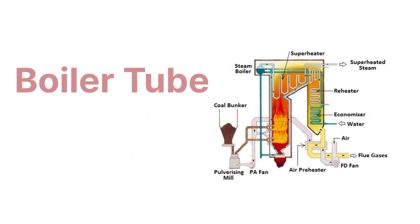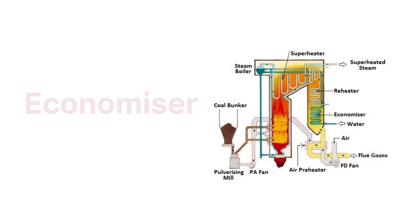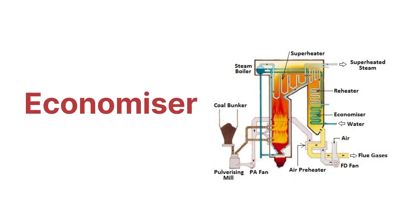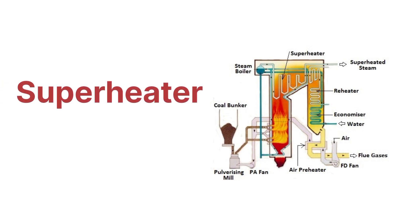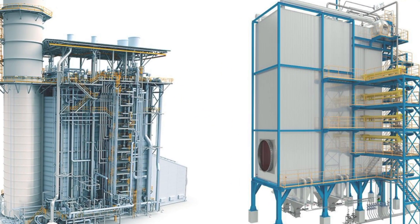The second component is the boiler tube, which carries the water and steam. The third is the economizer, which preheats the water before it enters the boiler. The fourth is the superheater, which heats the steam above its saturation temperature. And the final one is the reheater, which is used to reheat the steam after it has passed through the turbine.